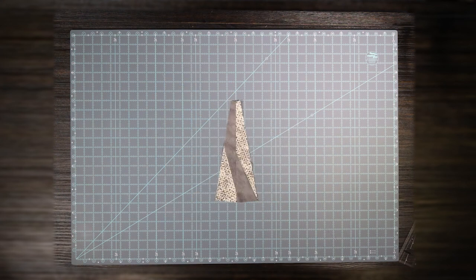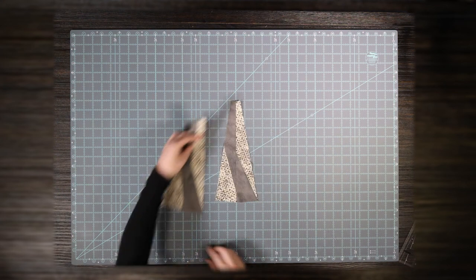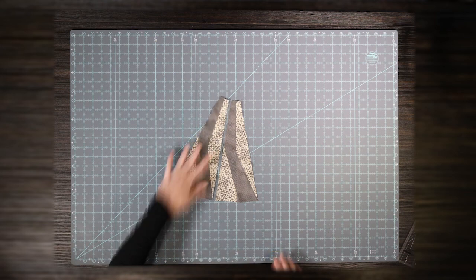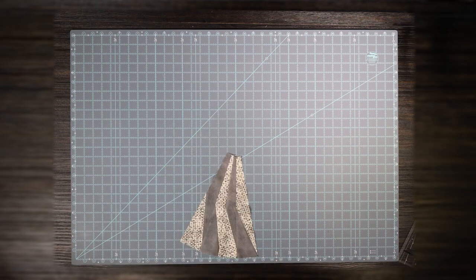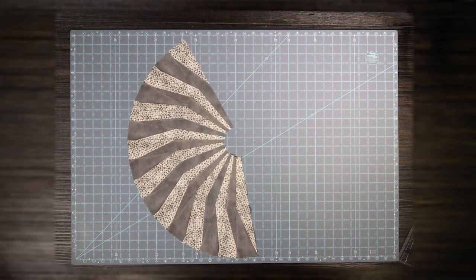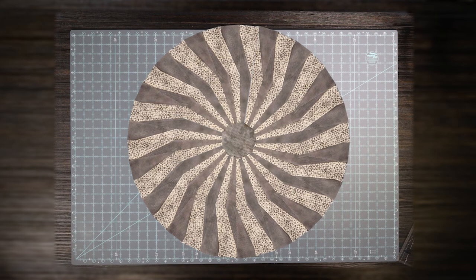Start to sew them together, and you can see those cute little legs walking around in a circle. Let's continue and sew all of our wedges together. There's our circle, and now we just add an applique.